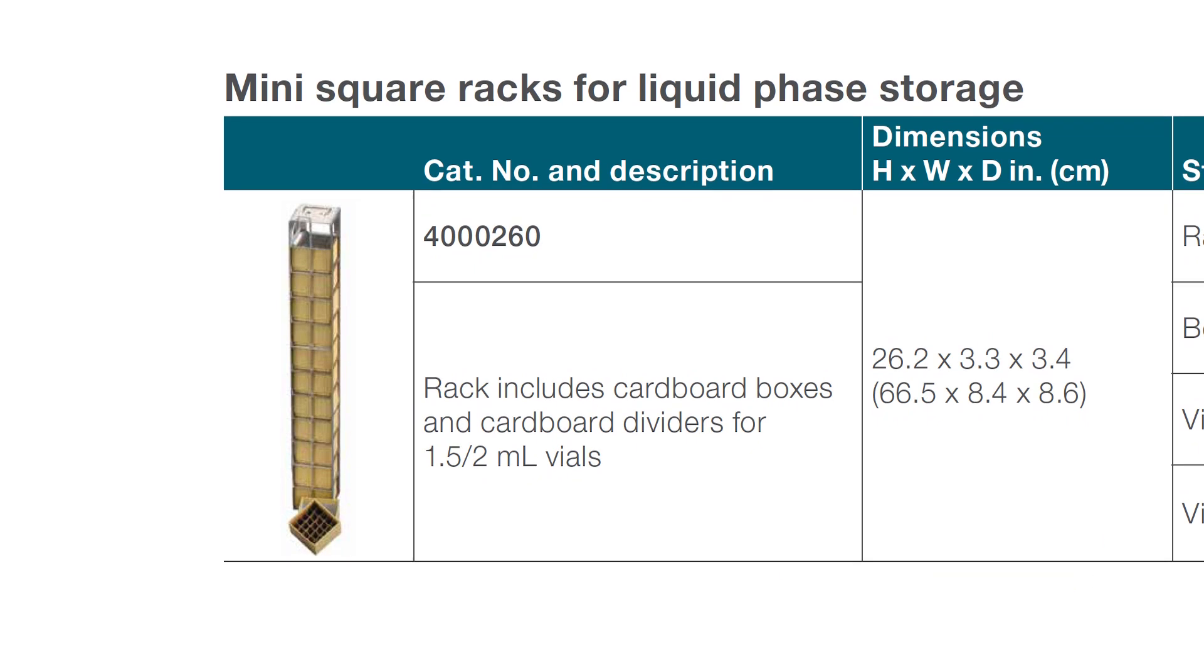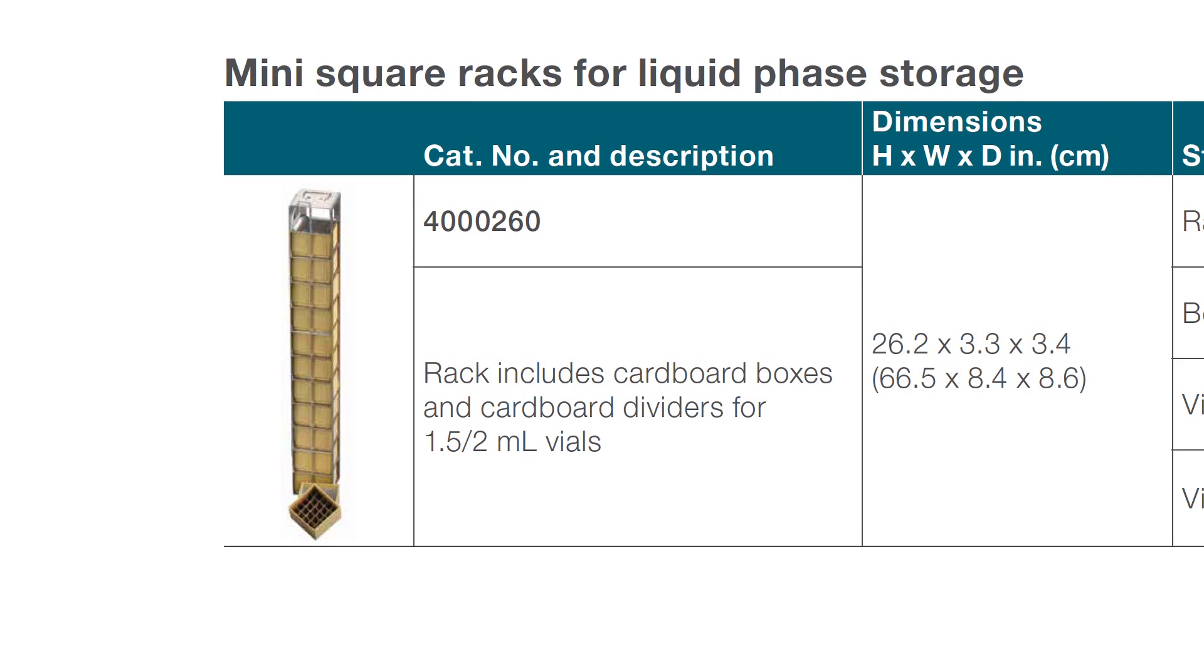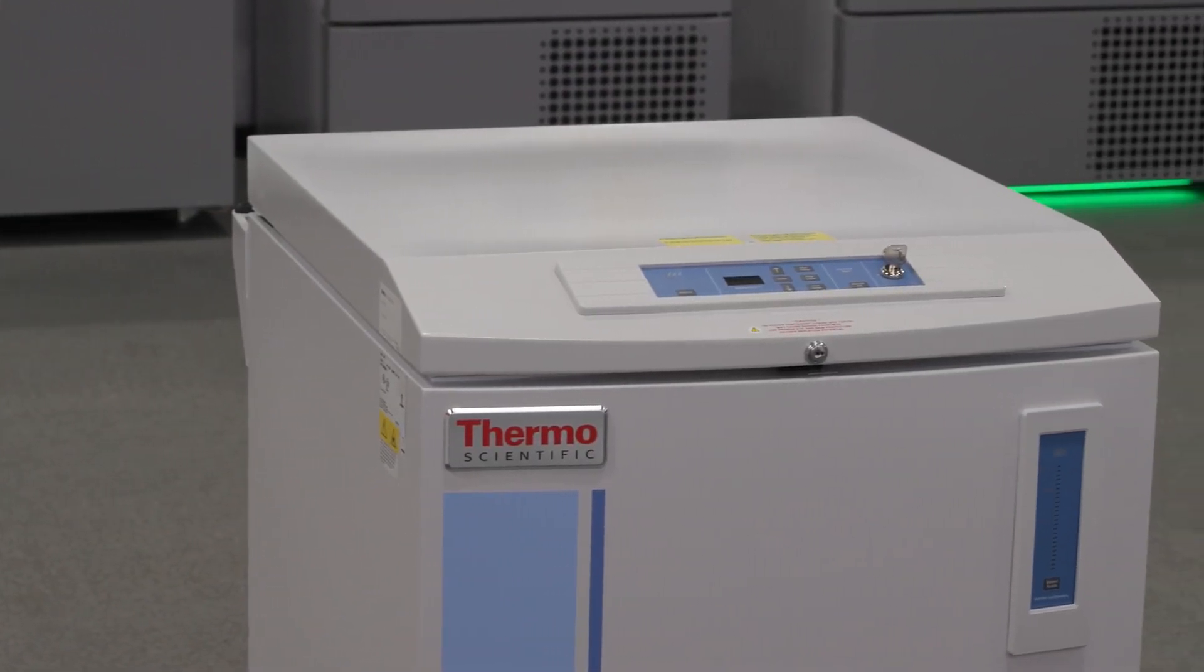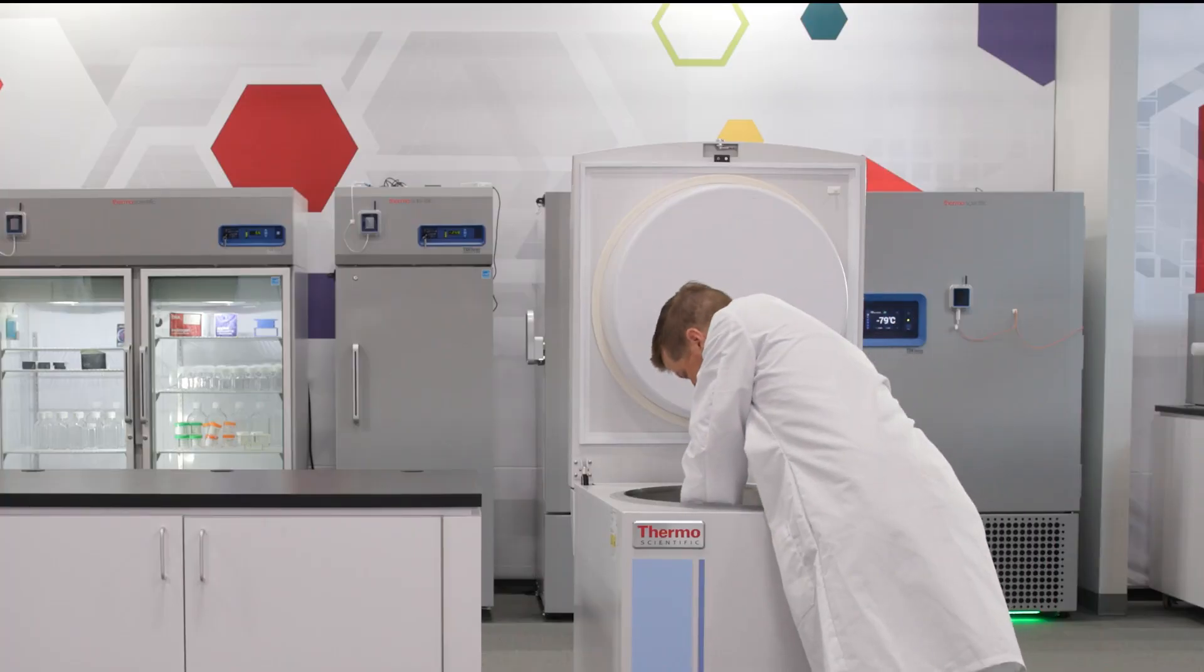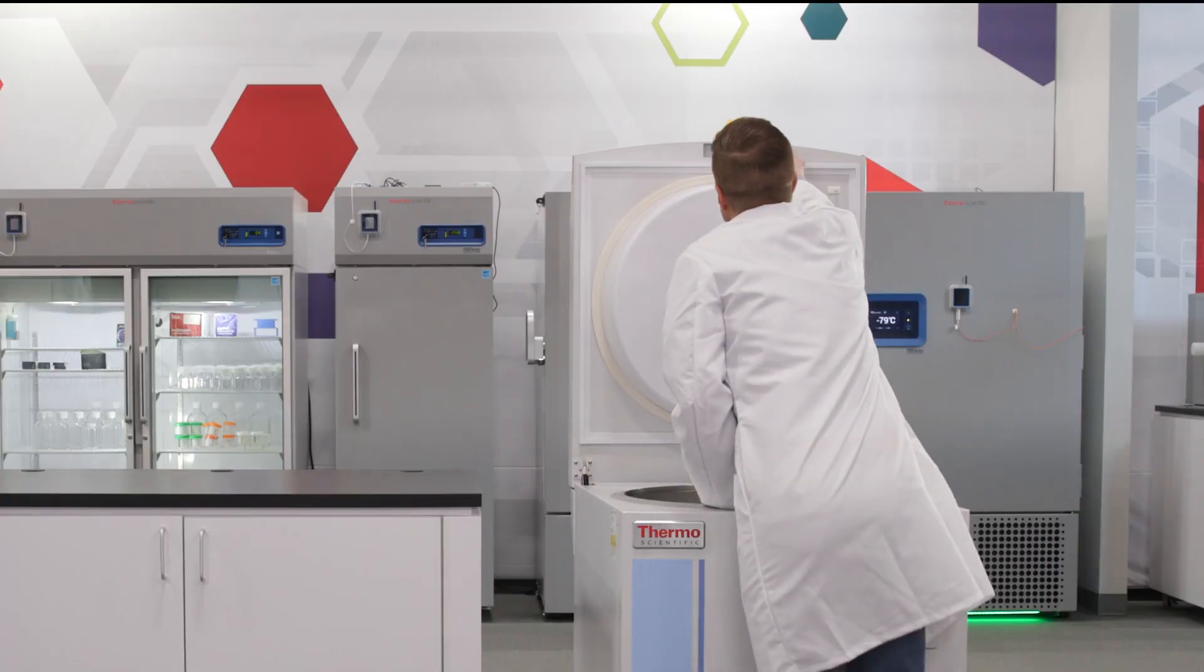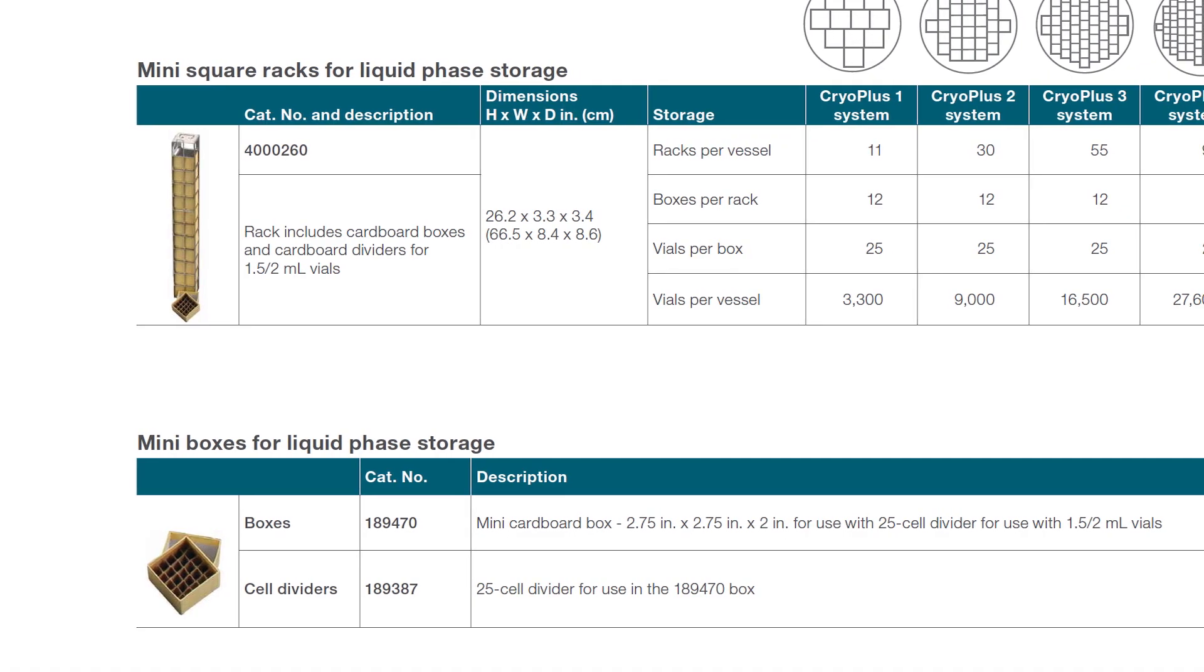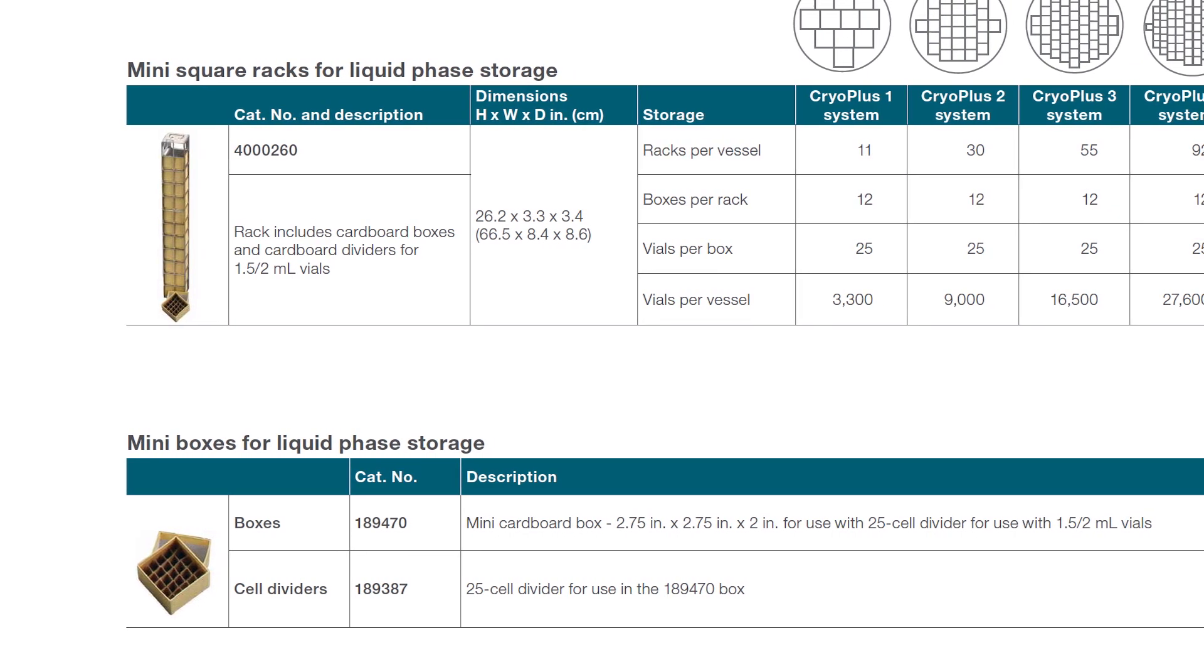This is a convenient solution for users who need to get into samples more frequently and want a more flexible option in accessing samples without exposing large numbers of vials to repeated temperature fluctuations. These smaller boxes are designed to accommodate 1.5 to 2 ml vials and can hold 25 vials per box.